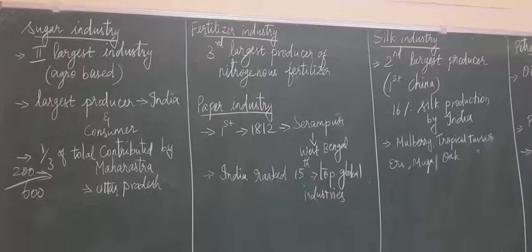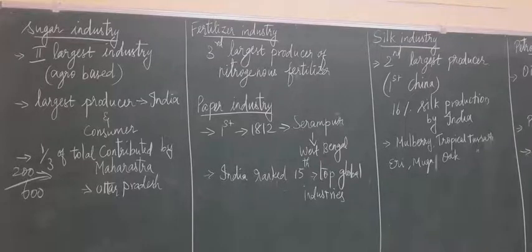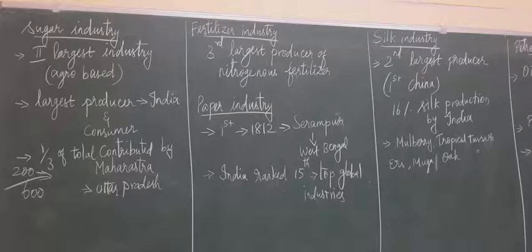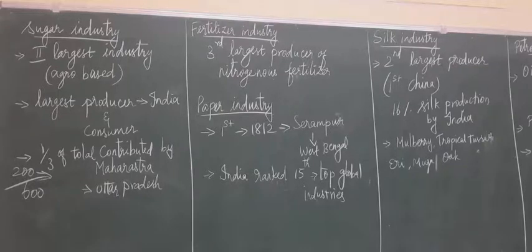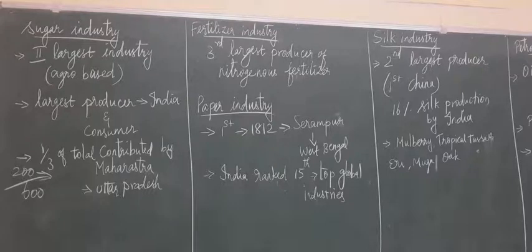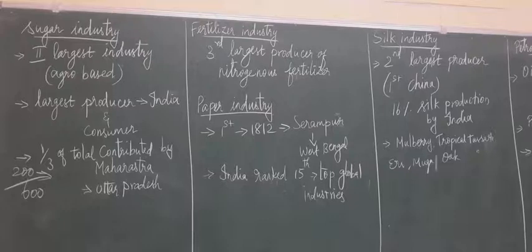In Tamil Nadu, we have TNPL — Tamil Nadu Newsprint and Papers Limited — near Karur. India is ranked 15th in the top global paper industries, so India holds the 15th position in paper production.